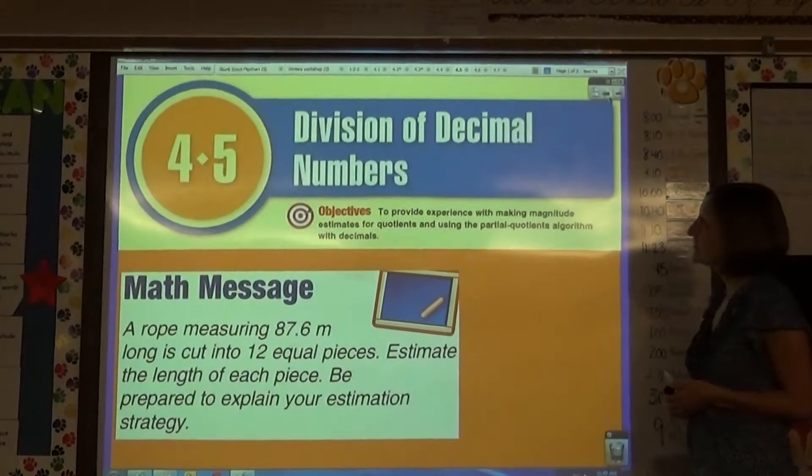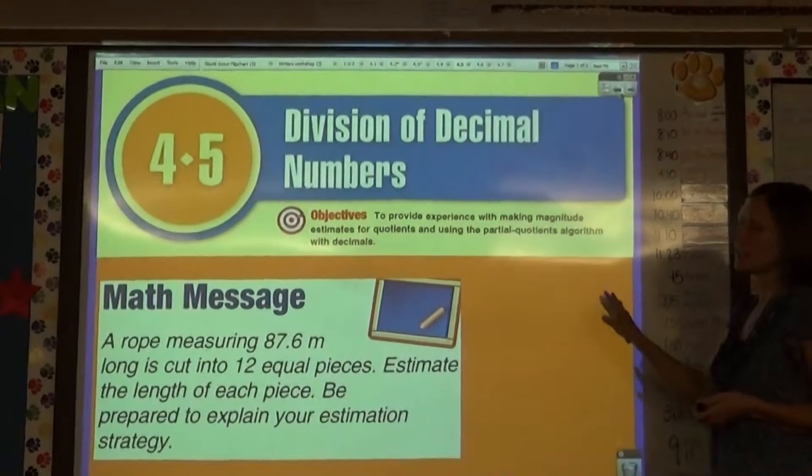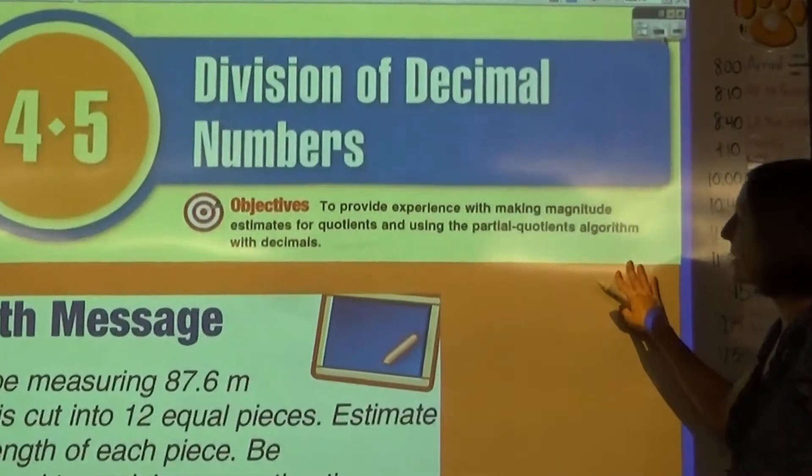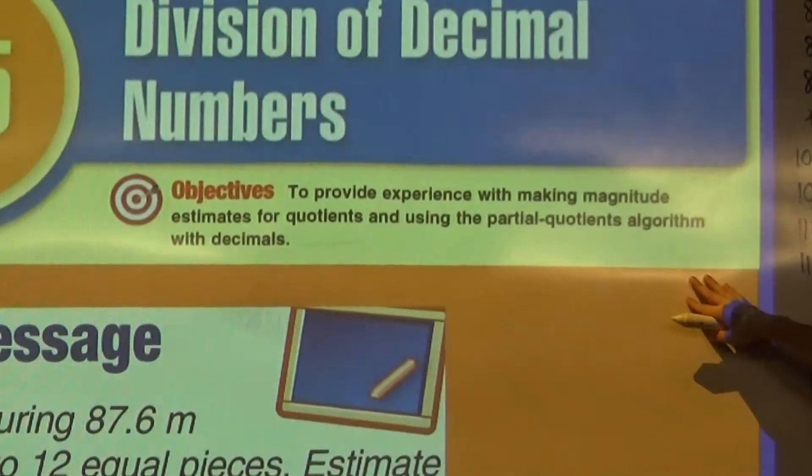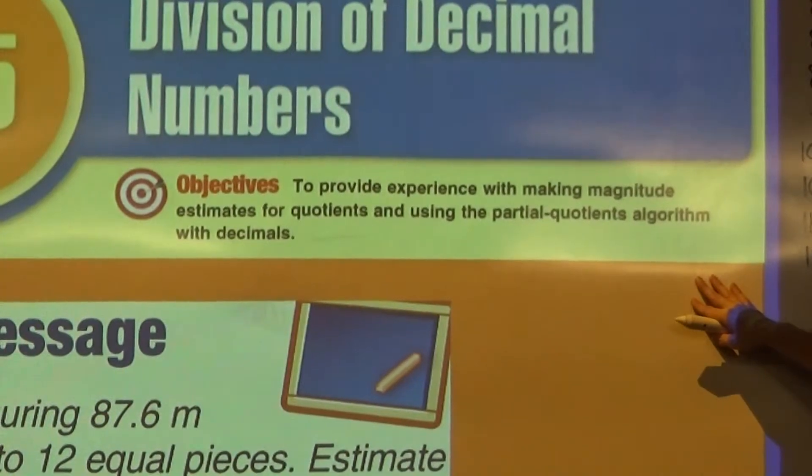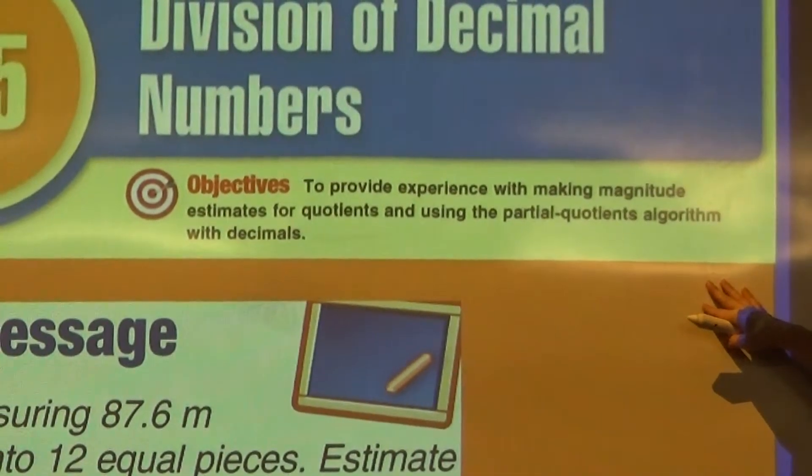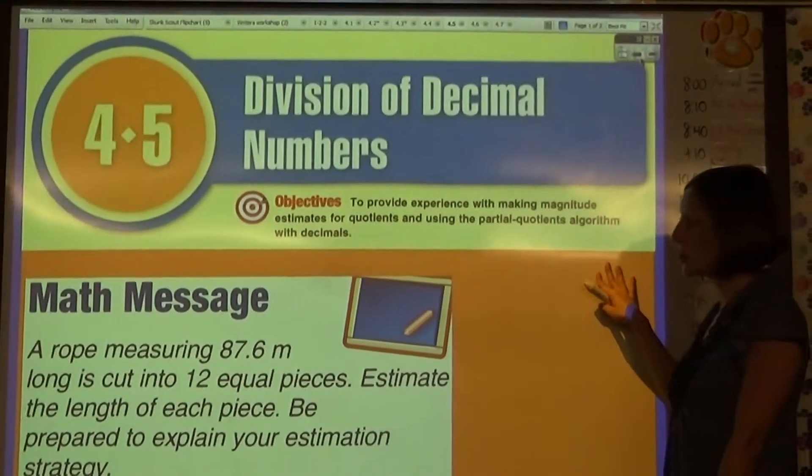Lesson 4-5 is the division of decimal numbers. Our objective is to provide experience with making magnitude estimates for quotients and using the partial quotients algorithm with decimals. We'll also look at using the traditional method of dividing.